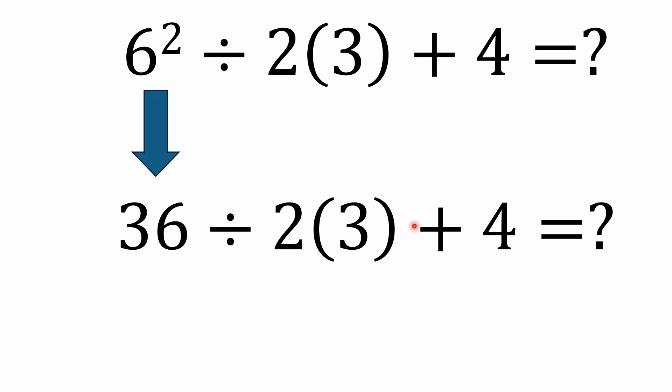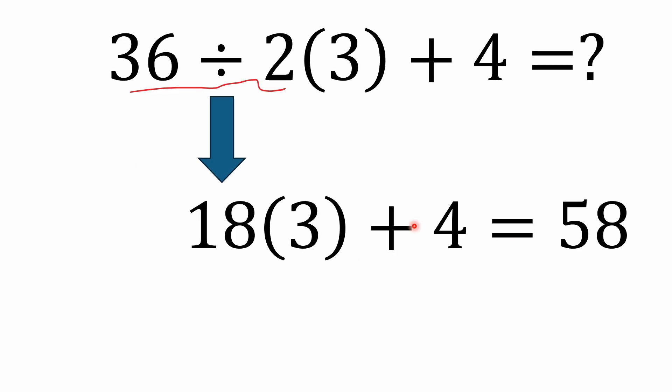Now, according to the order of operations, our next step should be division. And this is where some people will start getting this problem wrong. But 36 divided by 2 is 18. All right, 18 times 3 is 54. 54 plus 4 is 58.